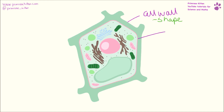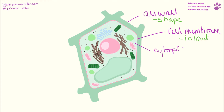Moving in, we have our cell membrane. This is responsible for controlling what goes in and out of the cell — water, ions — they need to go through the cell membrane, and the cell membrane is the bit that controls it. We have our cytoplasm, a bit that is often overlooked, and that's where most of the reactions take place.